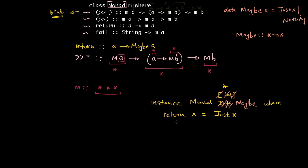To implement the bind method: it takes in as a parameter something of type M A, and takes in a function, and out comes a value of type M B. So what I'm going to do at this point is do some pattern matching. If the first value - the M A, meaning Maybe A - matches to Just x, and the second parameter is some function f, then I can apply my function f to x to get back a value of type M B.